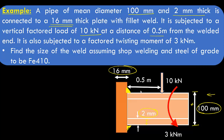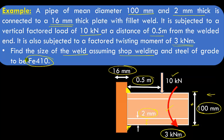The force of 10 kilo Newton is applied at 0.5 meter from the welded end. It is also subjected to a factored twisting moment of 3 kilo Newton meter. We have to find the size of the weld, assuming a soft weld and steel grade Fe410 for both the gusset plate and the pipe.